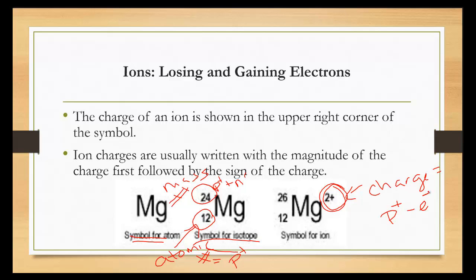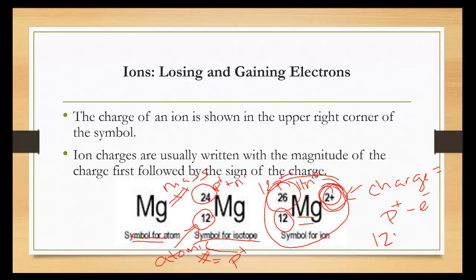For this particular ion, it's an ion of magnesium with 12 protons. Magnesium will always have 12 protons, because that's what dictates what magnesium is. Protons and neutrons together are 26, so that means I still have 12 protons, which means I have 14 neutrons. And it has a positive two charge — that means 12 minus something equals positive two, which means we have 10 electrons.